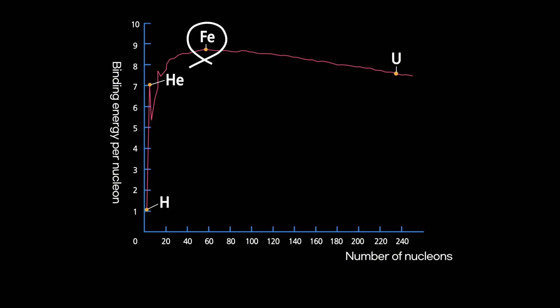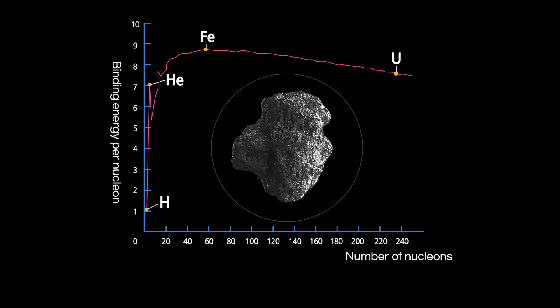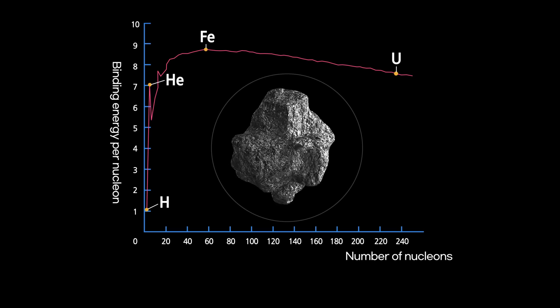The element with the biggest bonding energy per nucleon is iron. The higher this number, the more stable it is. Iron is the most stable element in nature, and other elements want to become as stable as iron.